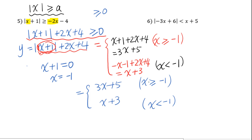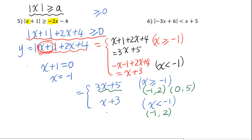Since two points determine a line, we find two points for each piece. For 3x plus 5 (x ≥ -1): plug in x = -1 to get y = 2, giving point (-1, 2); plug in x = 0 to get y = 5, giving point (0, 5). For x plus 3 (x < -1): use x = -2, and negative 2 plus 3 equals 1, giving point (-2, 1).